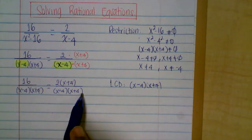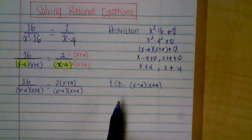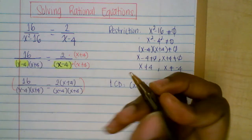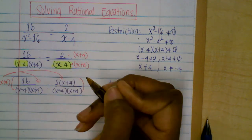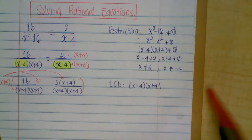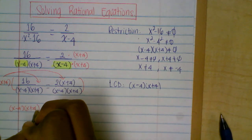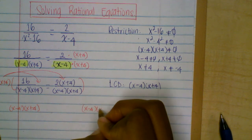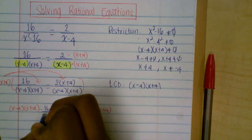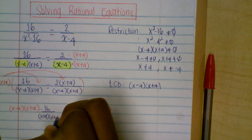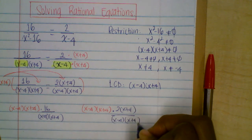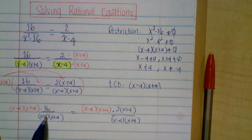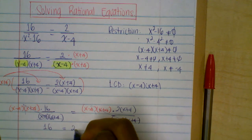So we now have the same denominator. We can multiply by the LCD, which is x minus four times x plus four. We multiply each rational expression by the LCD. A number divided by itself simplifies to one. So your left side is 16, equal to two times x plus four.